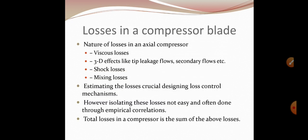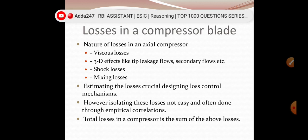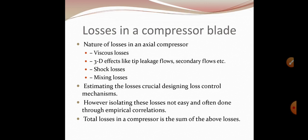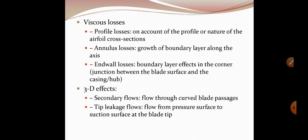Losses in a compressor blade: nature of losses in axial compressor are of four types - viscous losses, 3D effects like tip leakage flow, secondary flow etc., shock losses, and mixing losses. Estimating the losses is crucial for designing loss control mechanisms. However, isolating these losses is not easy and often done through empirical correlations. Total losses in a compressor is sum of the above losses.